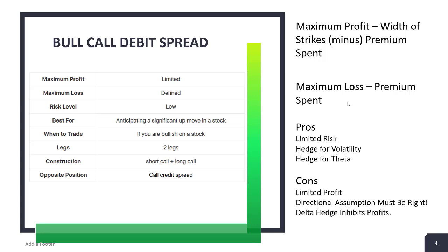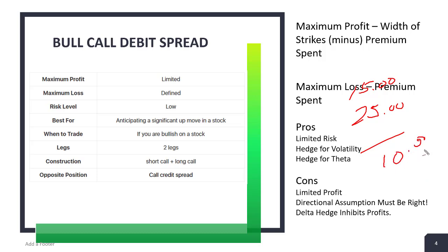Pros of the trade: limited risk and a hedging aspect for volatility. To me, what makes the debit spread more viable is trading them in a way to hedge volatility or to hedge theta. A lot of people look at an option that costs $25 per share and say they can't afford that, so they use a debit spread — picking up, say, $15 by selling an option, so now they have $10 at risk on the trade. That seems great.